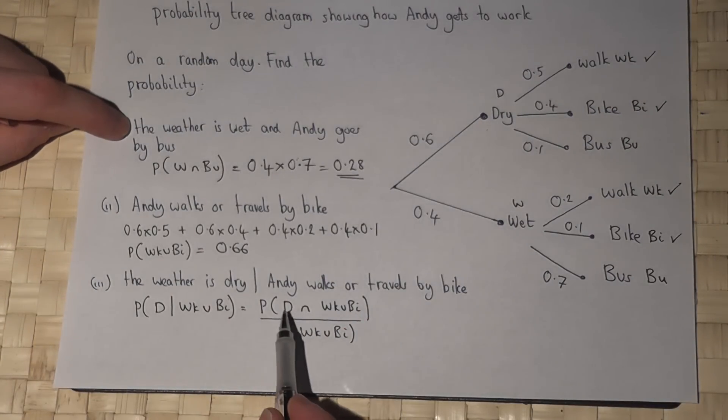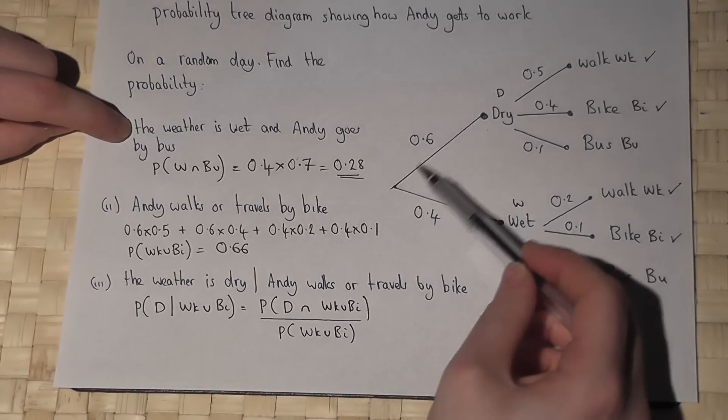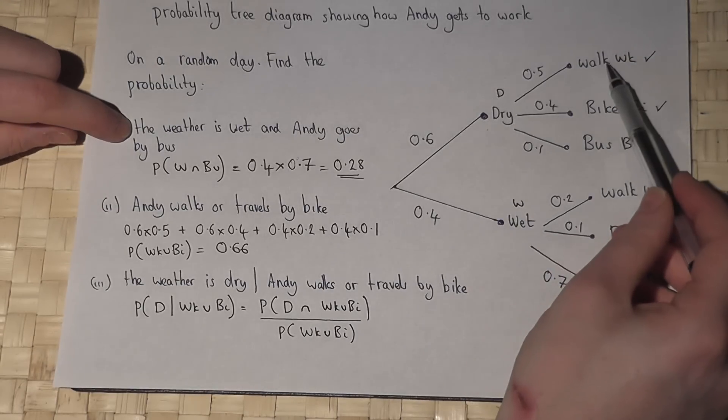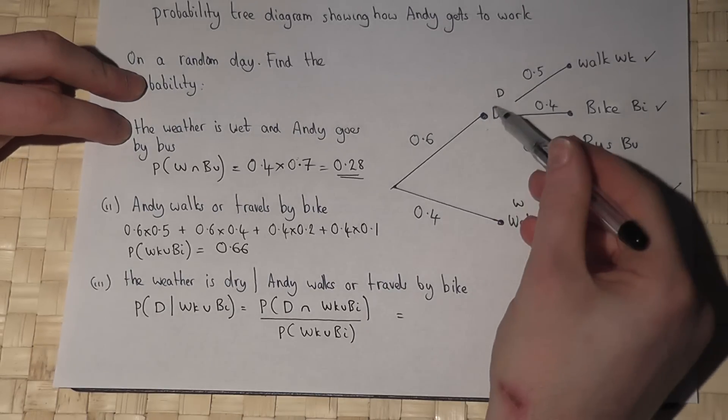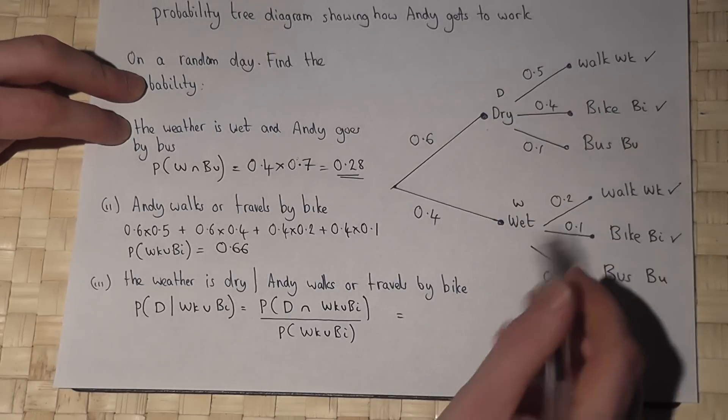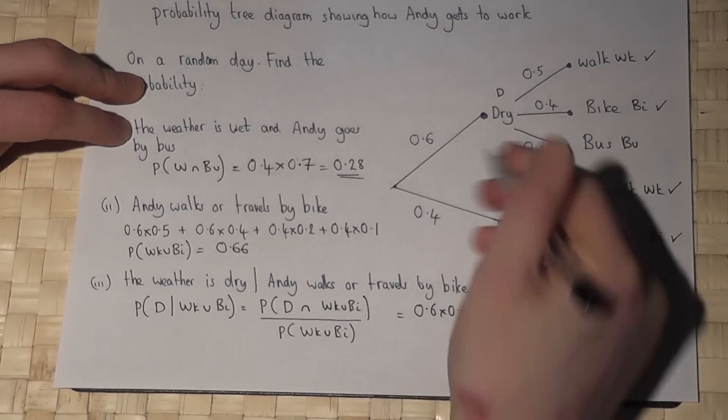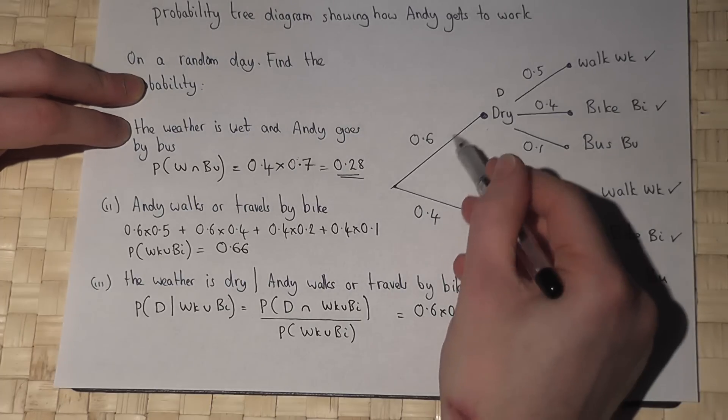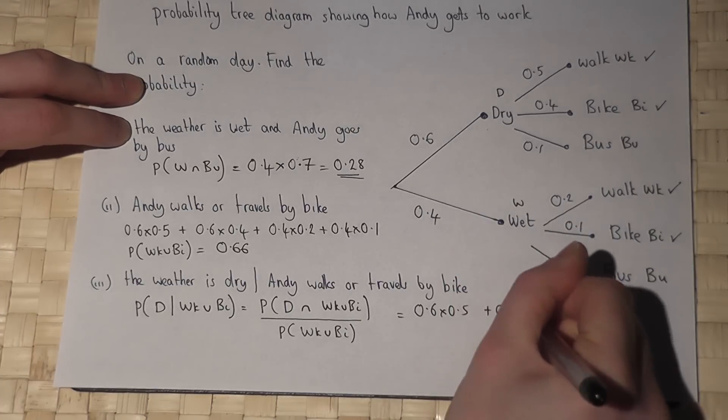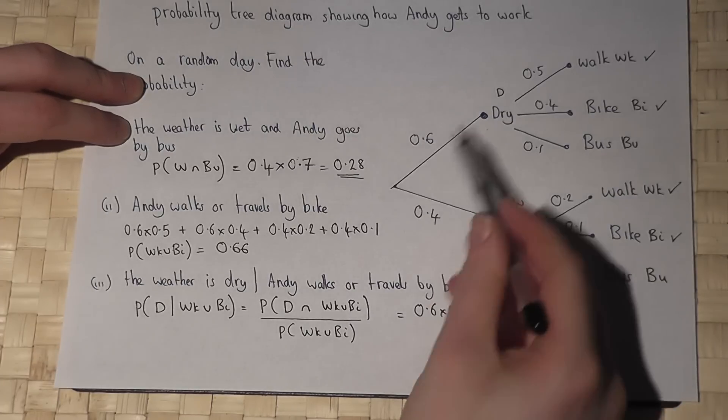Because dry and walks or bike just corresponds to the options where it's dry and he walks or takes a bike. So the top is just dry and walks or dry and bike. The top is just 0.6 times 0.5, it's that option or it's that option. So dry and walks or dry and bike.